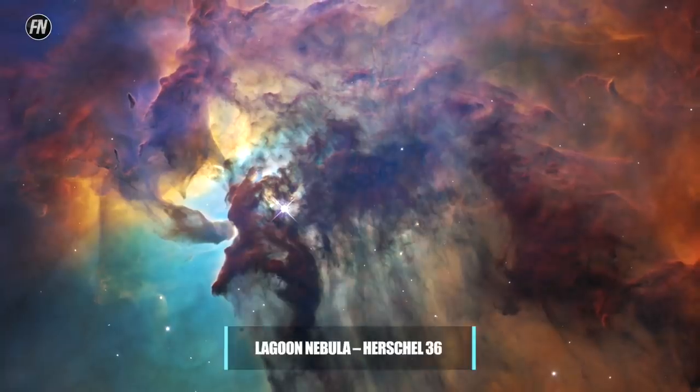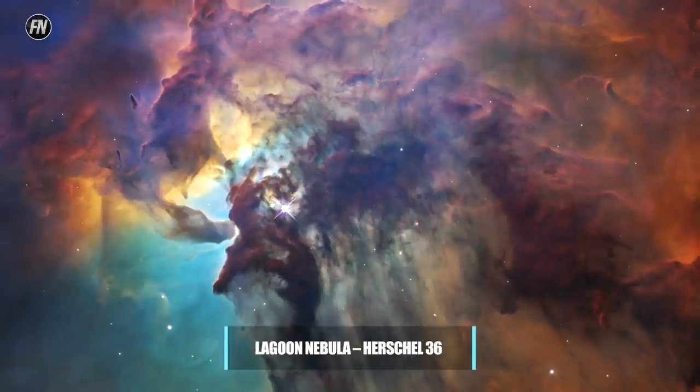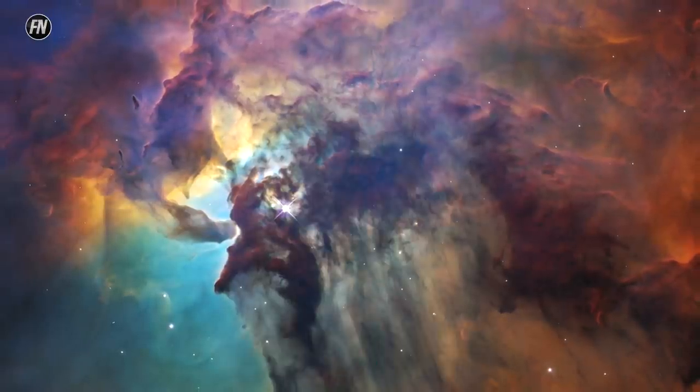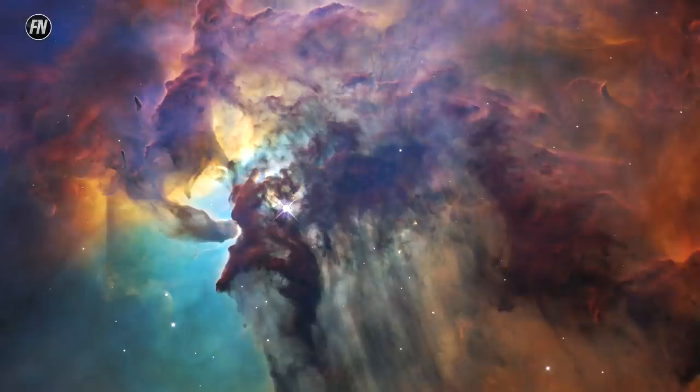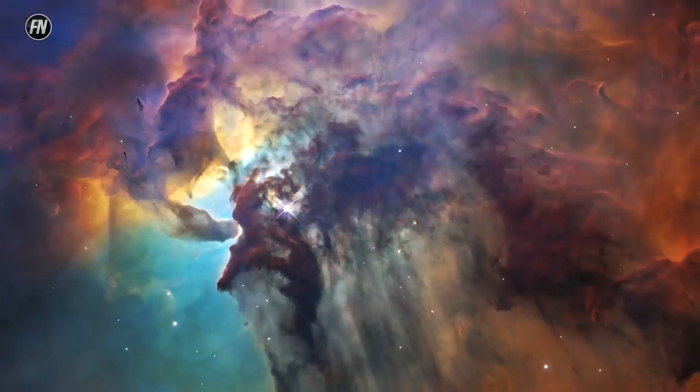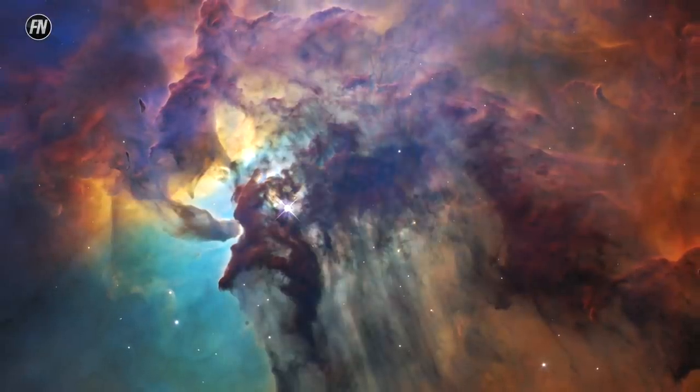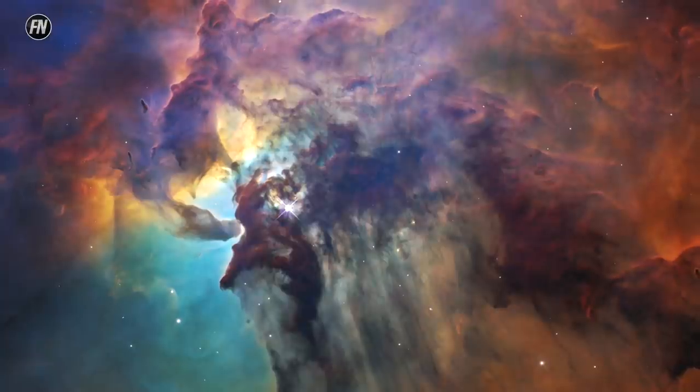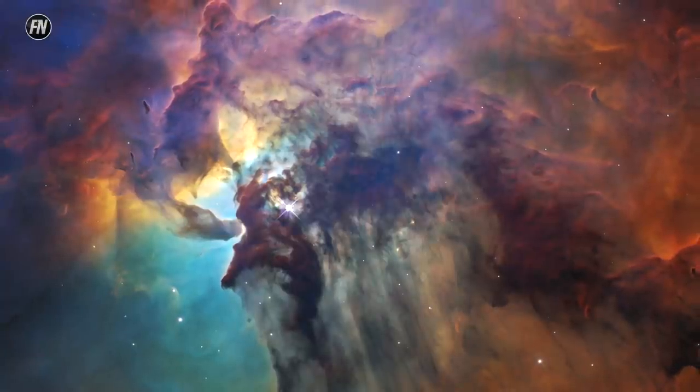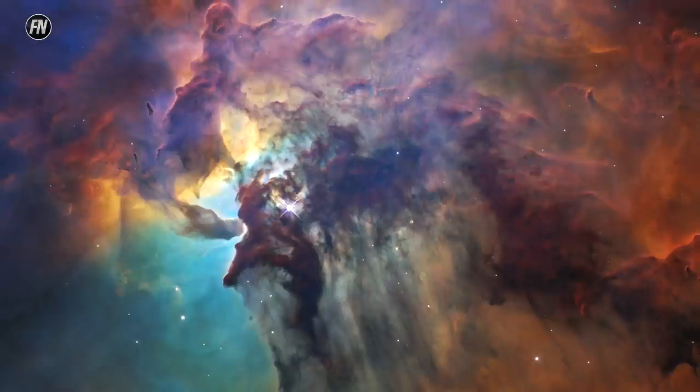Lagoon Nebula, Herschel 36. The Lagoon Nebula has Herschel 36 at its center, a star 200,000 times brighter than our Sun. The violent emission of ultraviolet radiation causes the stellar wind to act like a tropical storm, whipping the dust and gas around it into ripples and ridges.